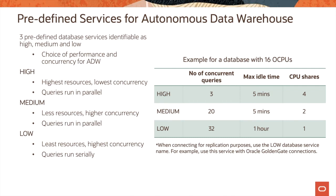On the right side of the slide, you'll see an example for a database with 16 OCPUs: it can have three connections using the high service, 20 using medium, and 32 using low. The maximum idle time for high and medium service is five minutes — if a session remains idle for five minutes it gets disconnected. Note that for replication purposes, we recommend using the low database service. For example, if you use Oracle GoldenGate for data replication, configure the database connectivity parameter for GoldenGate to use the low database service.